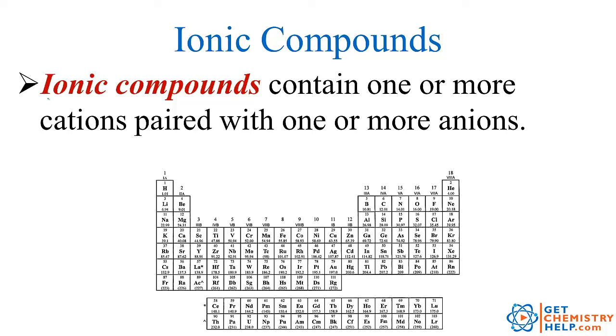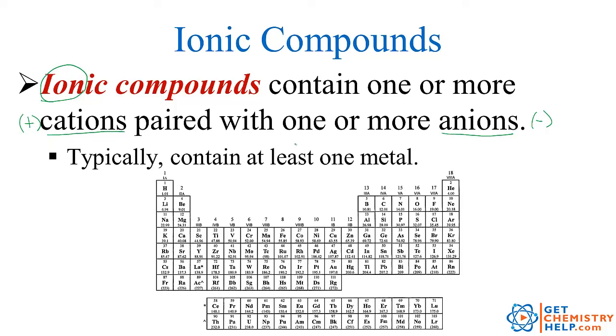Now, ionic compounds are just what they sound like. They are compounds composed of ions, so they're going to have one or more cations paired up with one or more anions. As you might recall, cations are ions that have a positive charge, while anions are ions that have a negative charge. Typically, but not always, 99.9% of the time, ionic compounds are easy to identify because the cation that's present is going to be a metal.